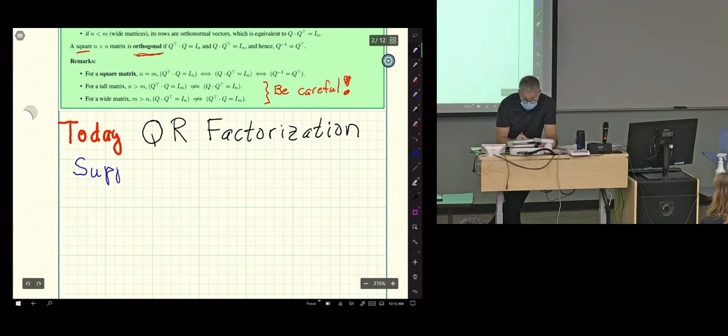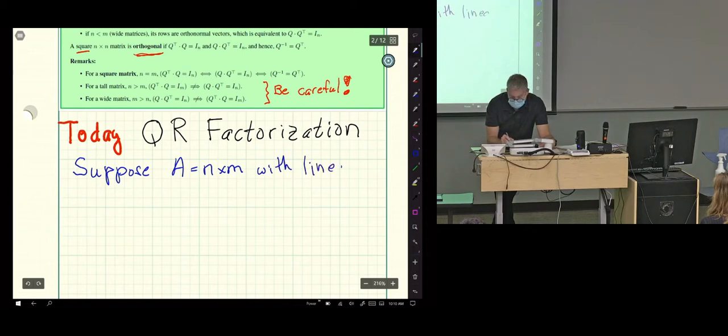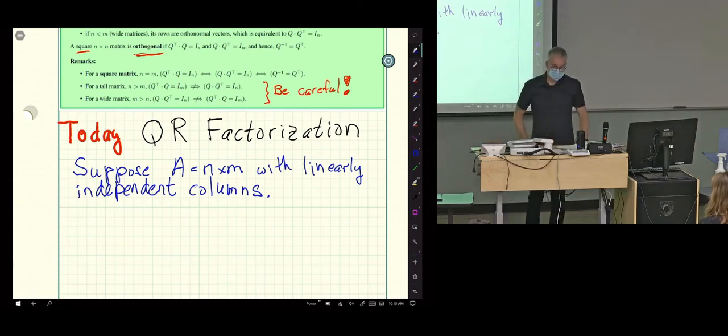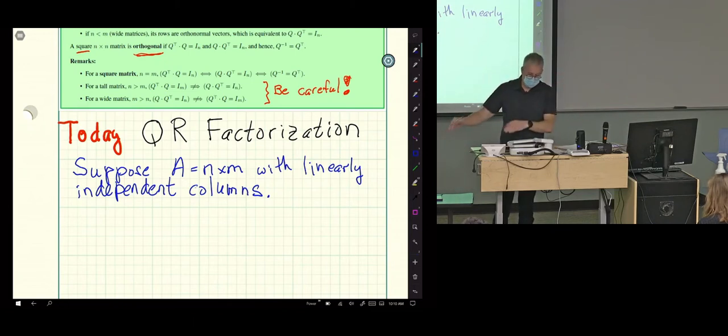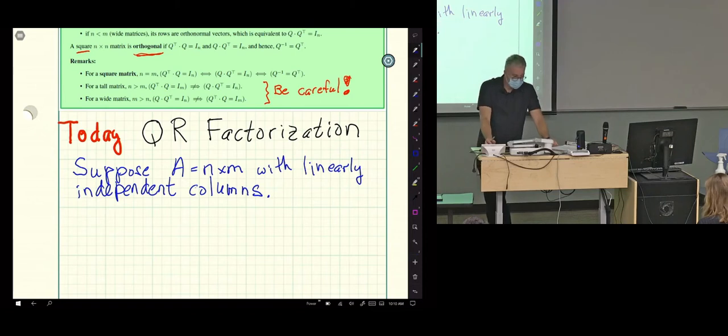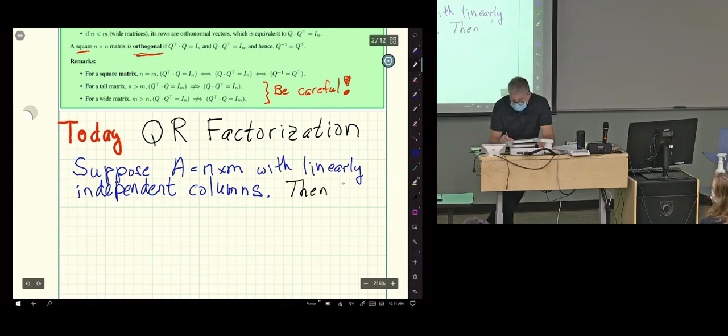The key step we need in Gram-Schmidt is that the columns are linearly independent or the vectors are linearly independent. So we'll suppose A is rectangular with linearly independent columns. So hopefully that concept is less frightening than it was two weeks ago. So there's no way to make a linear combination of the columns of A and get the zero vector except if all of the weights on the columns are zero themselves. It means that the null space of the matrix is the zero vector. The nullity of the matrix is zero.